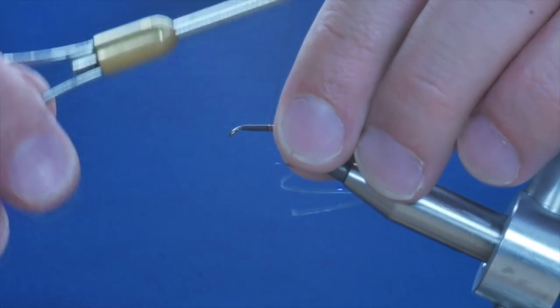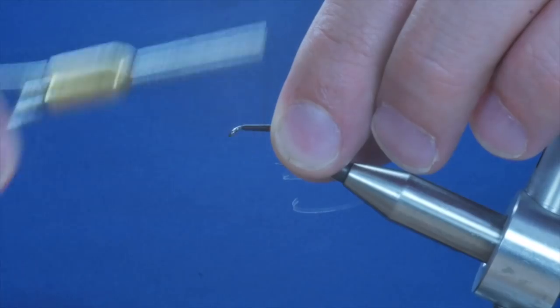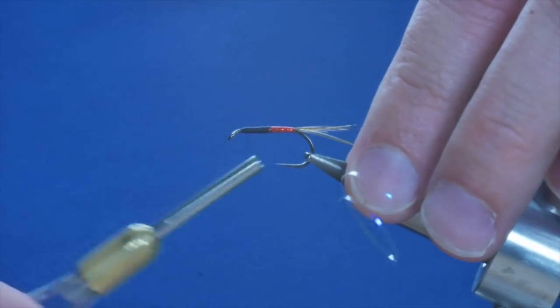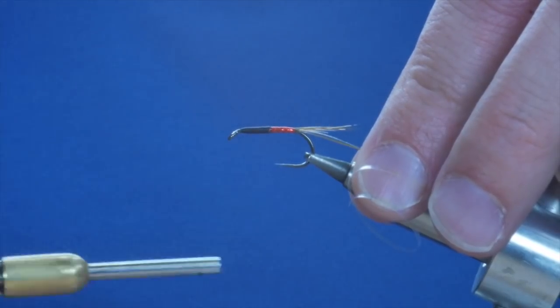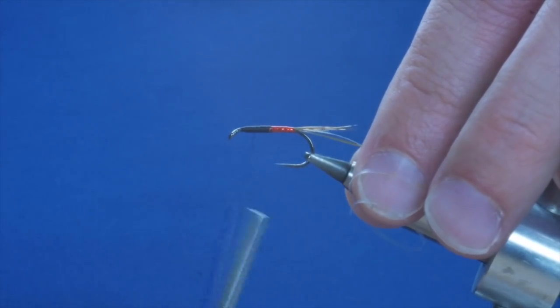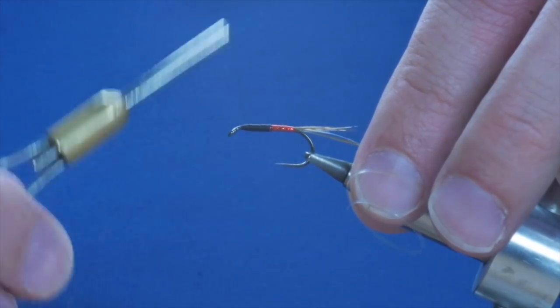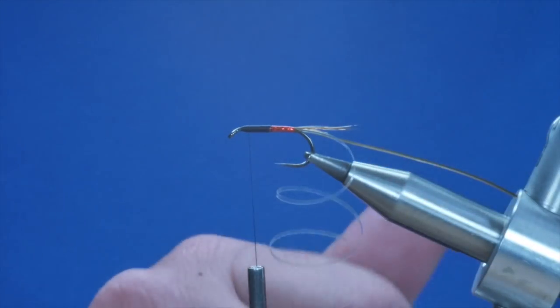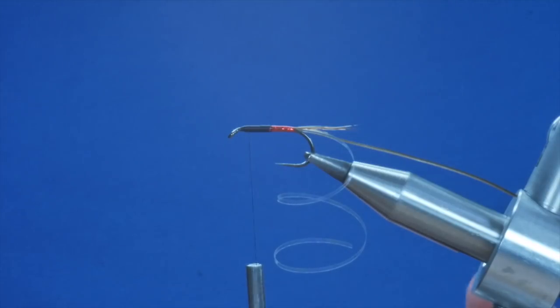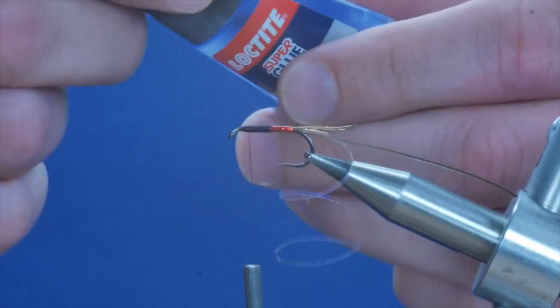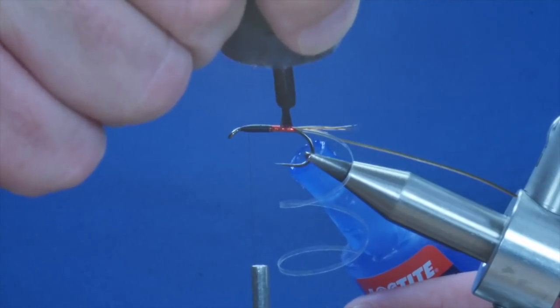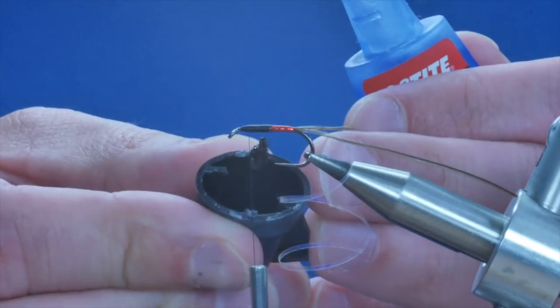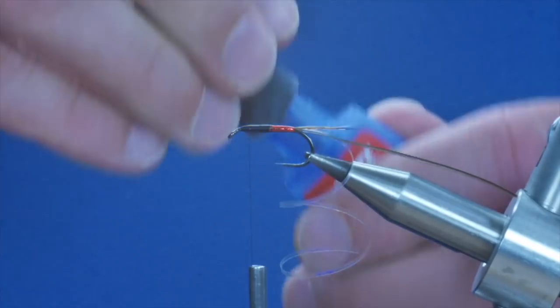Now before I do anything else I just want to tidy up this area here and of course while I'm doing that I can just increase my taper by putting a few more thread wraps in. I want it quite thick up at my thorax end. Now a little tip: I'm going to be bringing the strip peacock quill up next and what I always like to do just to help me with this is add a little layer of super glue onto the body. This helps in several different ways, not least if your hackle pliers let you down, there's a good chance that the super glue will hold your fiber in place.